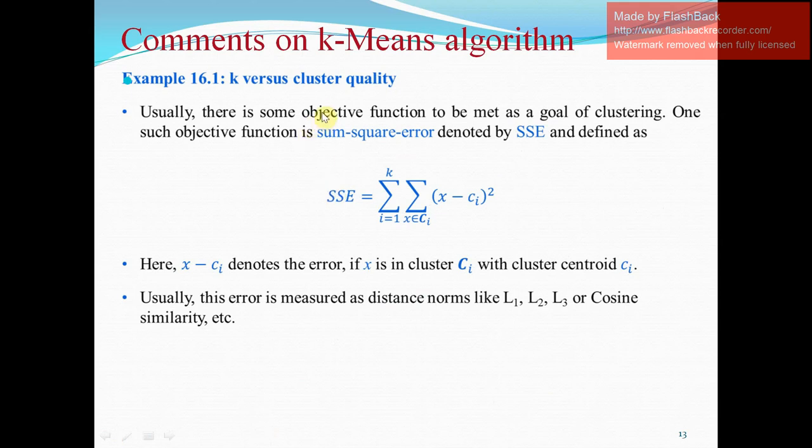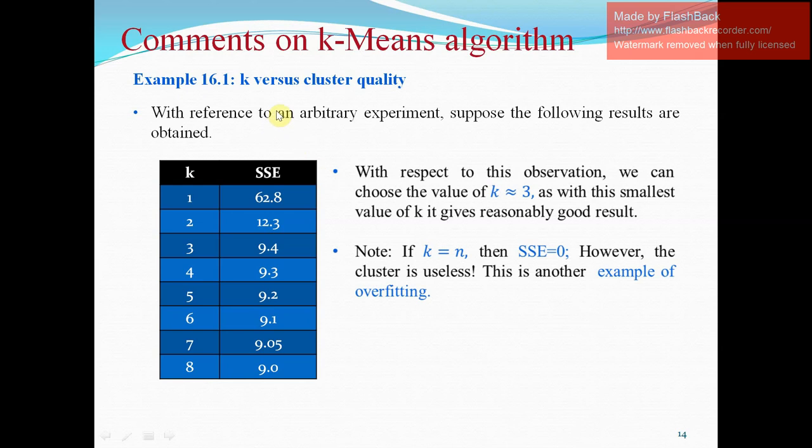K versus cluster quality has been discussed over here. Usually, there is some objective function to be met as a goal of clustering. One such objective function is sum square error that is SSE. It is denoted by summation of from i equals 1 to K, sum of square of the difference of X minus CI. This denotes the error if X is in the cluster CI where CI is the cluster centroid CI. Usually, this error is measured as distance norms like L1, L2 or L3 or cosine similarity. Here, K versus cluster quality has been discussed here. With reference to an arbitrary experiment support, the following results are obtained for the K 1 to 8. If K is equal to N, then SSE would be zero. However, the cluster is useless. This is another example of overfitting.